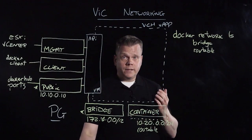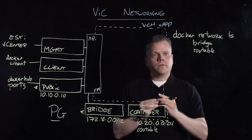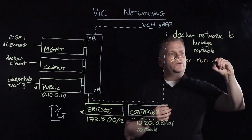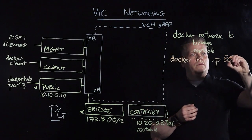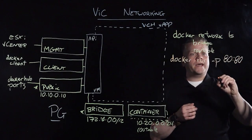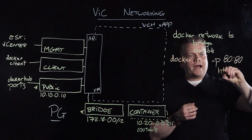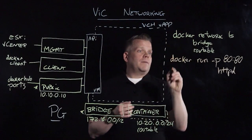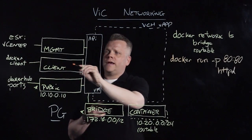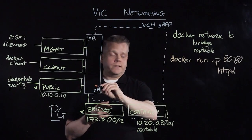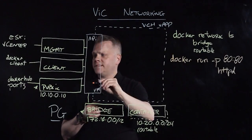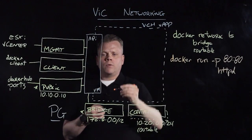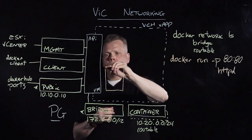Let's look at two examples of running a Docker image. In the first example, we'll use a standard docker run command with the -p option to redirect a port from my container to my public network — running a simple HTTP process. The Docker command runs through the Docker client network to reach the API. My VCH will check its image cache to see if it has the HTTPD image. If it doesn't, it goes out to the internet on the public network to fetch it, then talks to vCenter on the management network to create my container VM.